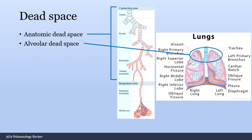Dead space refers to areas where gas exchange is not occurring. There are two types: anatomic dead space, which is the conducting zone of the respiratory tree where there are no capillaries for gas exchange; and alveolar dead space, located at the top of the lungs where ventilation is high but perfusion is low due to gravity and pressure requirements. High ventilation with no perfusion creates dead space.